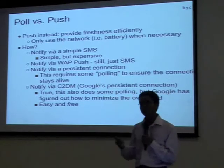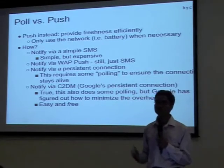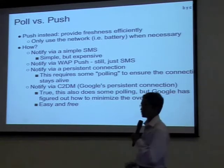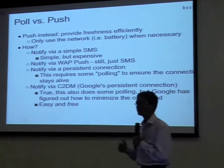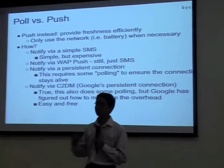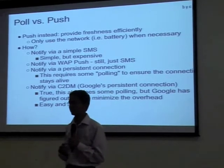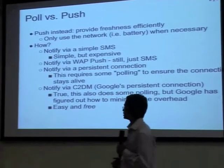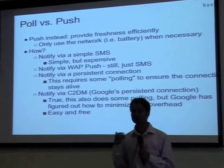Push only uses the network and battery when necessary, that is when there are updates on the server. One way to do it yourself is to send a simple SMS — you run an SMS server, put permissions for accepting SMS, get the URL, and send an SMS to the particular device to notify it to update its data. However, this is costly because of the cost of sending SMS.